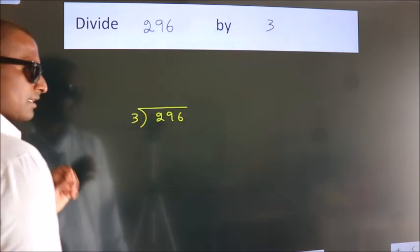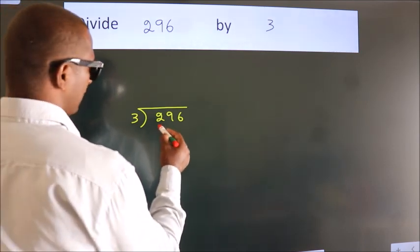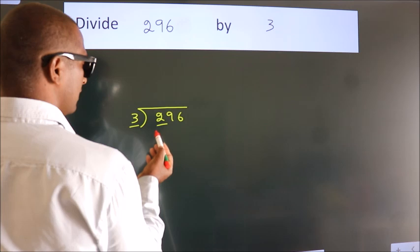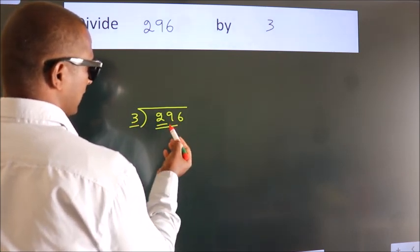This is your step 1. Next, here we have 2, here 3. 2 is smaller than 3. So we should take 2 numbers, 29.